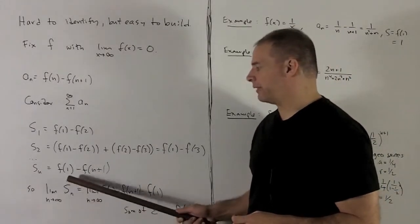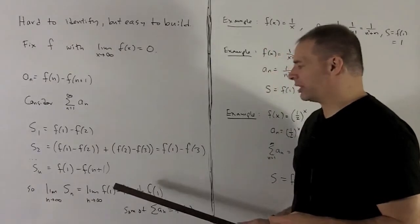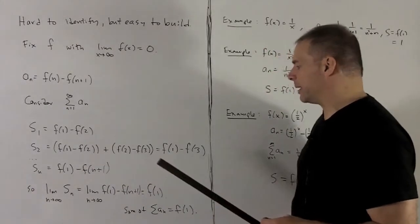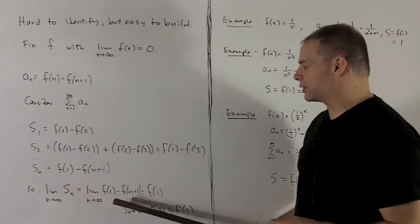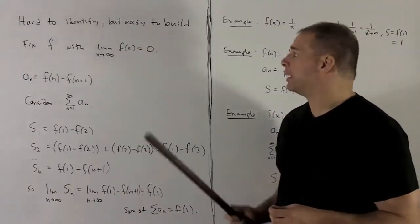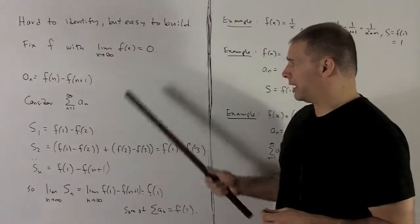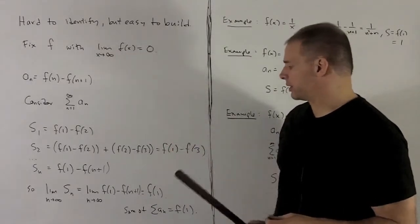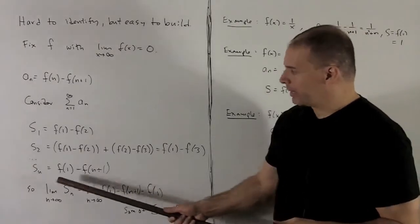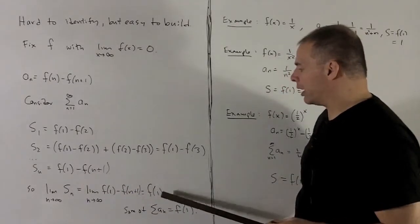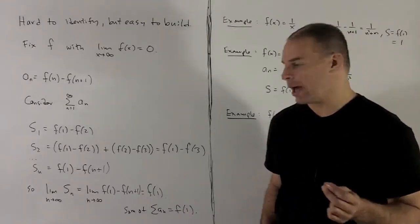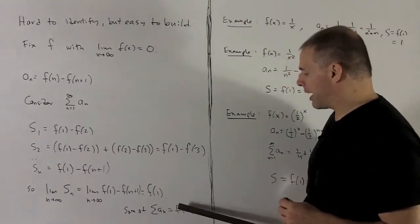I take the limit as n goes to infinity of our partial sums. That's going to leave me with f of 1, just a constant which goes outside the limit. And then we know the limit as n goes to infinity of f of n plus 1 is going to be equal to 0. It's going to have the same limit as f of x. So we wind up with our limit of the partial sums being equal to f of 1. And remember, that says our series converges and its sum is going to be equal to f of 1.